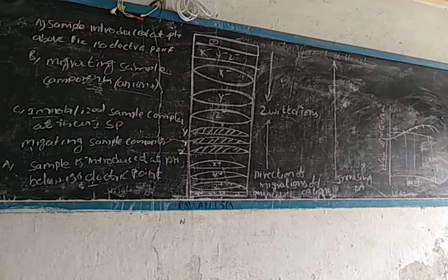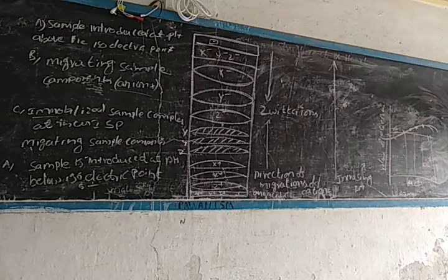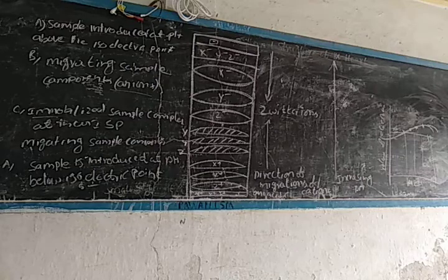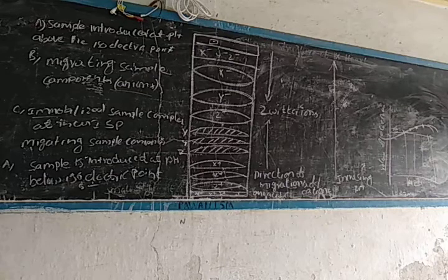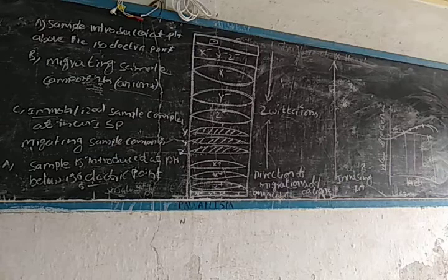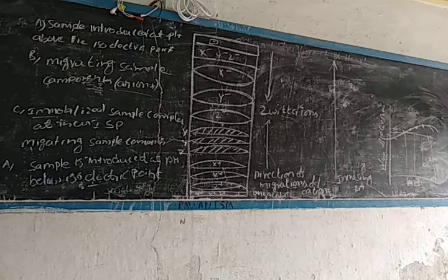We have x minus, y minus, z minus representing the charge state. Then we have the isoelectric point, where the net charge is zero. The next step is migrating sample components — B is migrating, followed by immobilization. If the sample is introduced at a pH below the isoelectric point, we need to identify that isoelectric point.